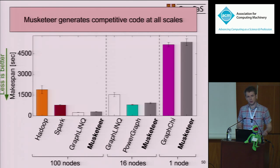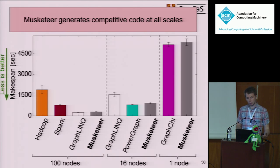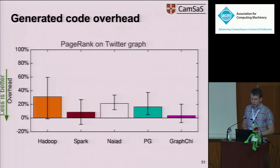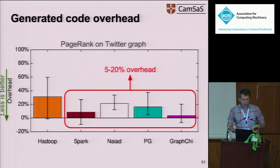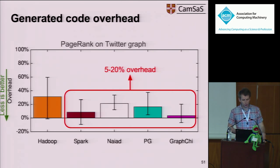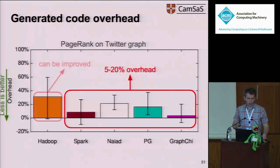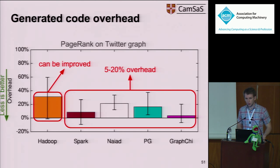Kermit checked the exact overheads of Musketeer-generated code by running the same computation in every back-end execution engine and comparing baseline runtimes with Musketeer-generated code. The overhead is between 5% and 20% for Spark, Naiad, PowerGraph, and GraphG. There is one outlier — Hadoop — where the overhead is about 30%, but that can be sorted out with more engineering effort.